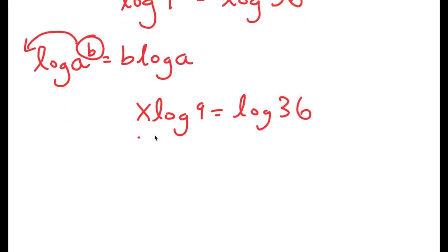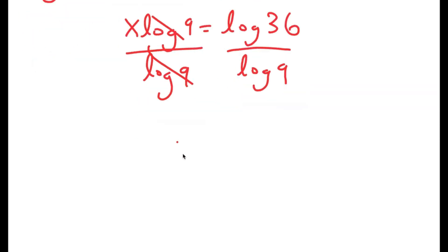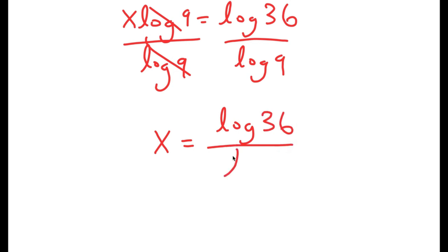From here, I can divide both sides by log 9. These two cancel out, and I get x is equal to log 36 over log 9.